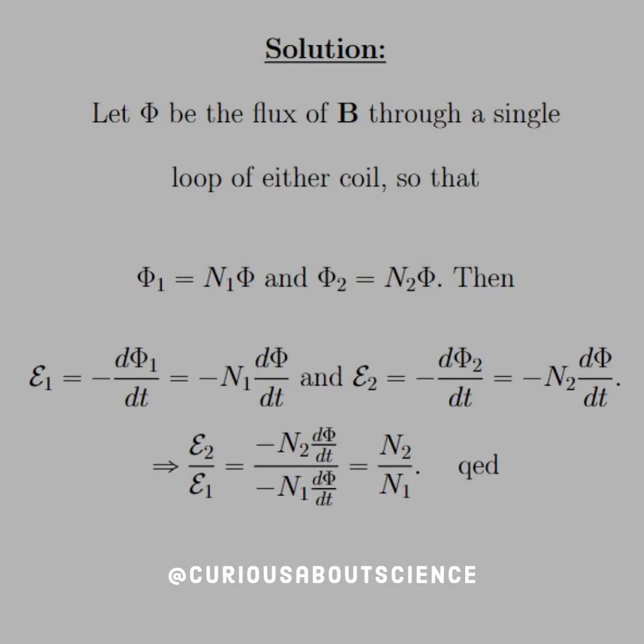Now you see that both of them have a d phi dt term, so go ahead and take their ratio, and we'll see that they cancel out nice. What we see here is that E2 over E1 is equal to negative N2 d phi dt over negative N1 d phi dt, so they cancel along with the negative signs, and you're equal to N2 over N1. And boom.